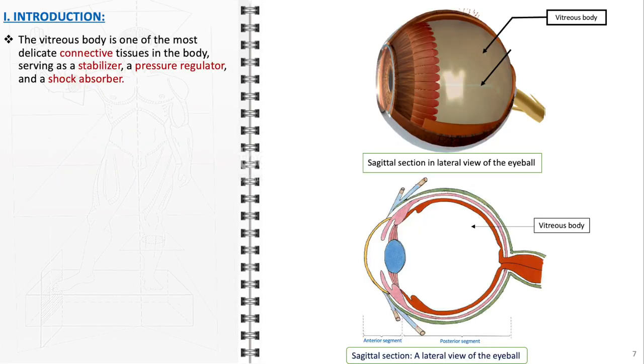The vitreous body is a critical structure within the eye, characterized by its unique composition and functions. It is one of the most delicate connective tissues in the body. It plays an indispensable role as a stabilizer, pressure regulator, and shock absorber.